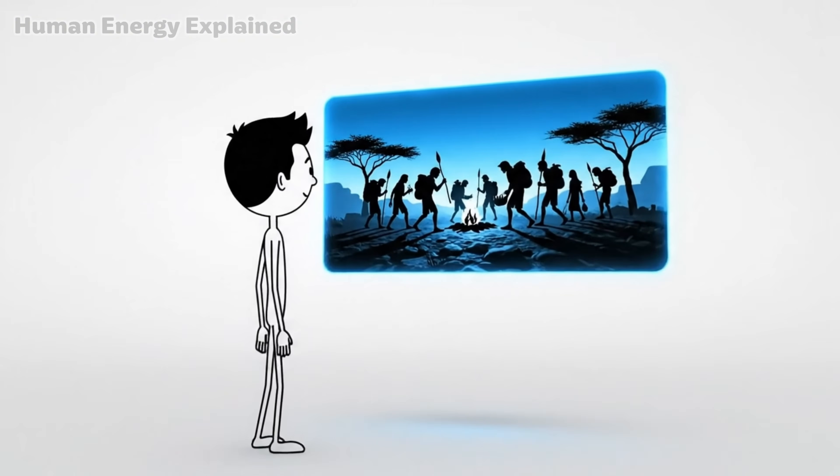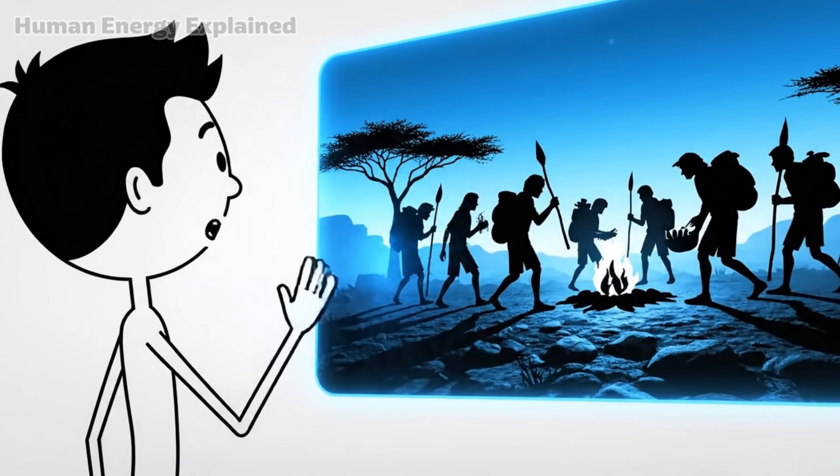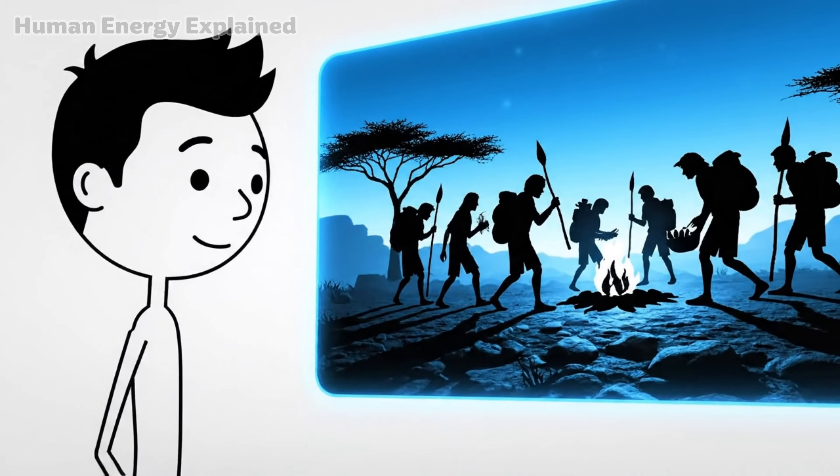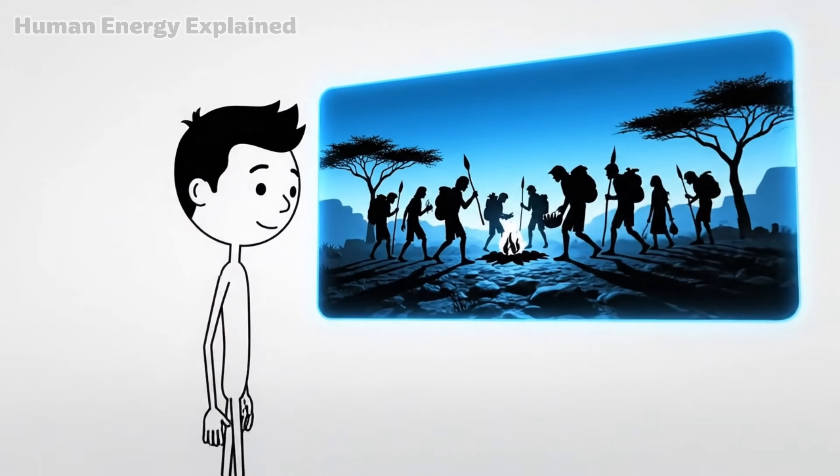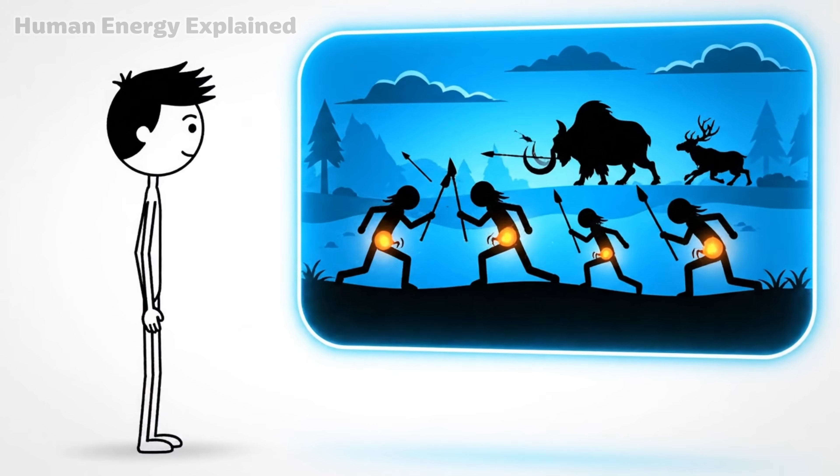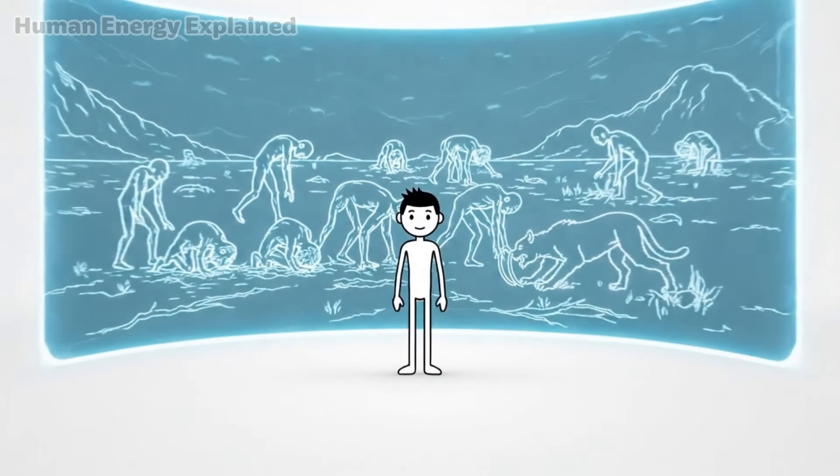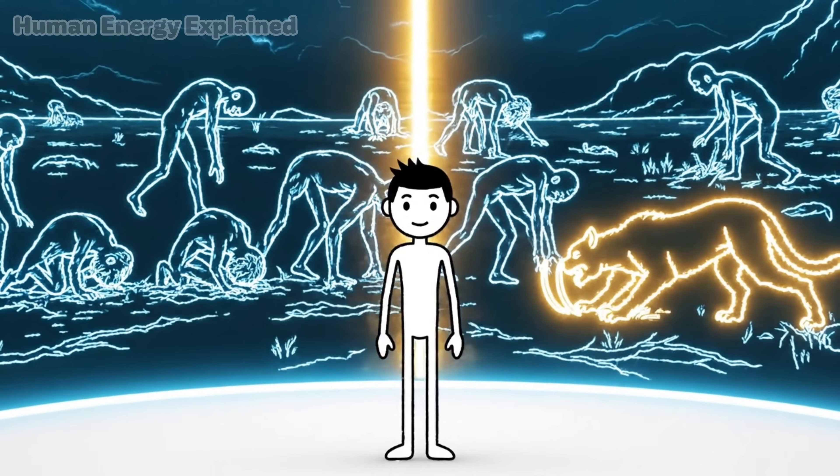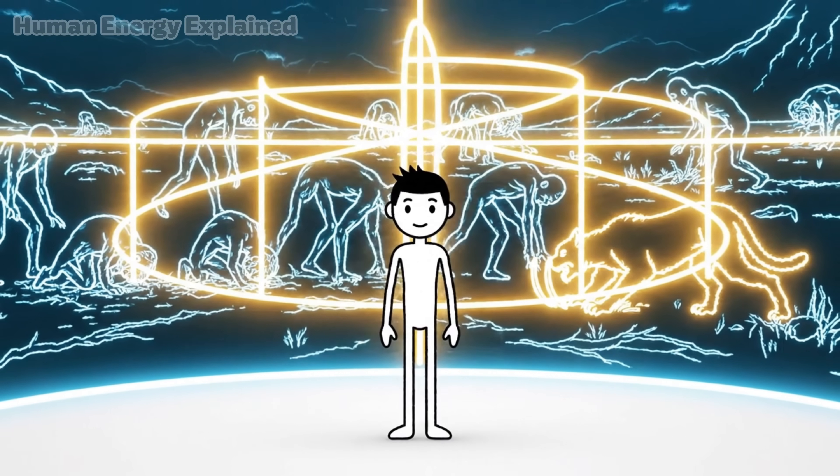Here's the evolutionary story behind all of this. 50,000 years ago, your ancestors didn't have refrigerators. They didn't have grocery stores or delivery apps. They hunted, and often they hunted hungry. Days could pass between successful kills. If their bodies simply collapsed during those periods, humanity would have ended right there.